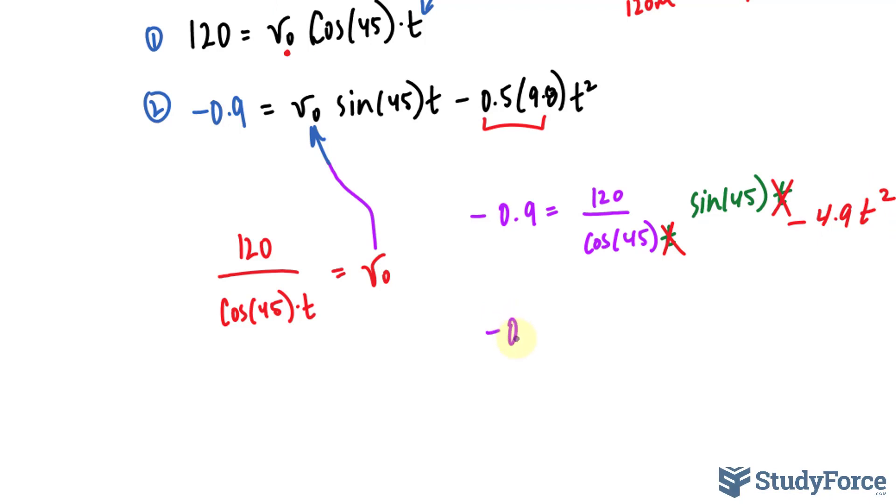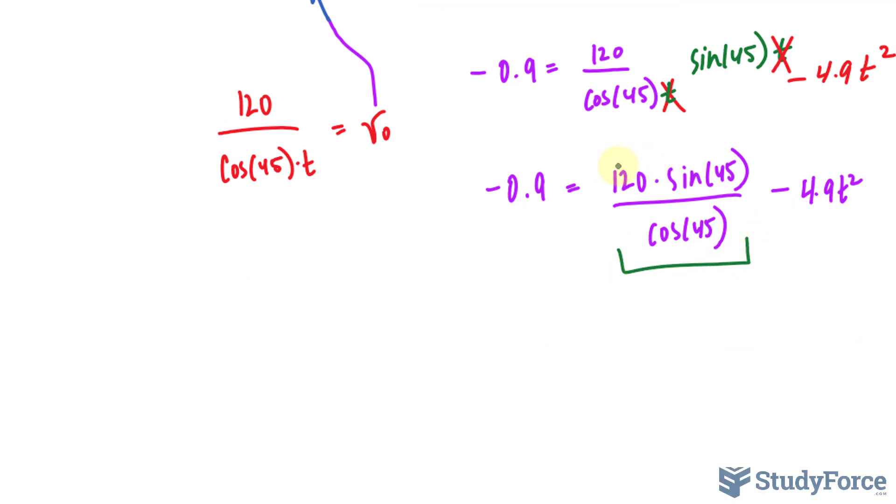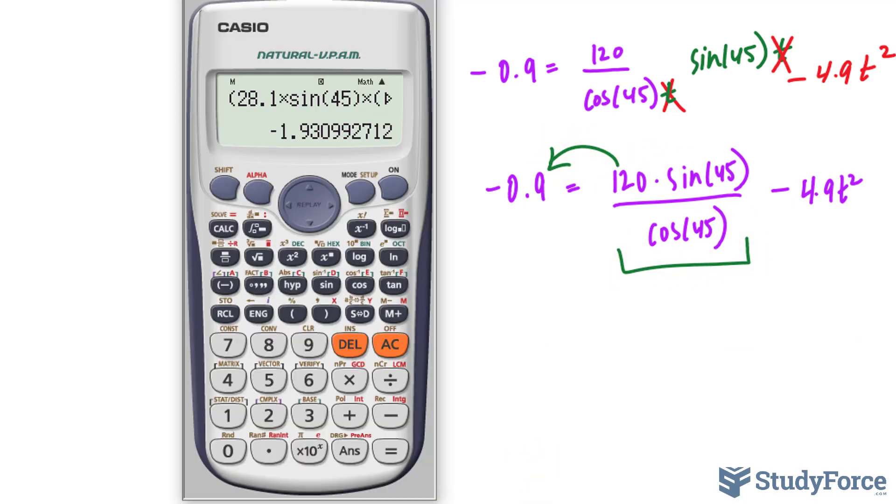So, all I have to do is solve for t squared and then for t. We have 120 times sine 45 over cosine 45 minus 4.9t squared. You do not need the quadratic formula for this part. You can solve it manually. You can actually take this whole expression, whatever it is equal to, and bring it to the other side. Let me show you on the calculator. I have negative 0.9 minus the whole expression. So, 120 times sine 45 divided by cosine 45. And that's equal to negative 120.9.